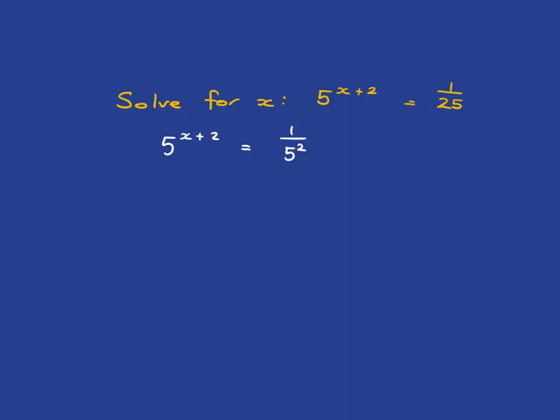But we haven't got just a plain 5 on the right. We've got 1 over 5 squared. So we need to get it so that you've got 5 to the something equals 5 to the something. So what's our next step going to be? Write it down.